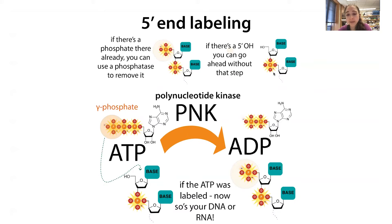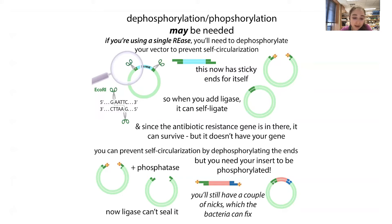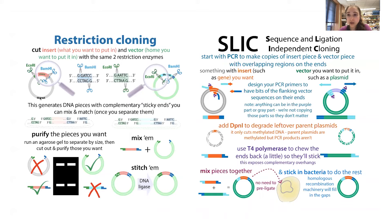If you need to do phosphorylation, you can do this easily with a polynucleotide kinase — this is also how we do radiolabeling, adding radiolabeled phosphate groups. Restriction cloning is a really common method. One caveat: you want to make sure you don't have cut sites elsewhere in the plasmid or in your insert for that enzyme, because then you would have multiple pieces and not your full-length thing.